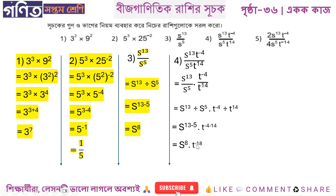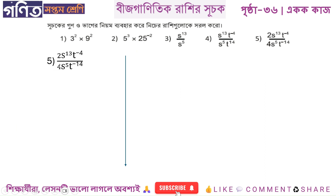So this is minus 18. The first question is 2s to the power of 13 into t to the power of minus 4, divided by 4s to the power of 5 and t to the power of minus 14. This is how we will do this — we separate the s group and the t group and write each as a group.